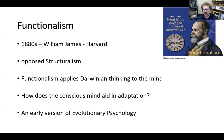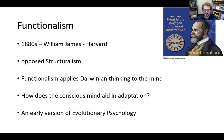Instead, William James applied Darwinian thinking to the mind — taking the ideas of natural selection proposed by Charles Darwin, which was a very recent idea at the time when On the Origin of Species had just come out. William James was interested in identifying the various functions of different mental capabilities in terms of evolutionary purposes: how do these mental faculties allow someone to survive and reproduce more effectively? This was really the beginning of what's now known as evolutionary psychology, which is still very much an alive and vibrant field of inquiry.